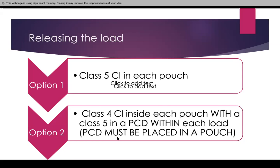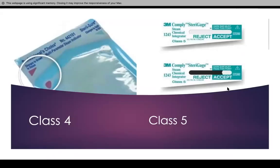If you come over here and look, this is what a class 5 looks like — this is what goes into the processing challenging device. These over here are also chemical indicators. The internal one is a class 4 — so you don't need to be placing class 4s inside PCDs. This is a class 4, this is a class 3, and this is also another class 3.